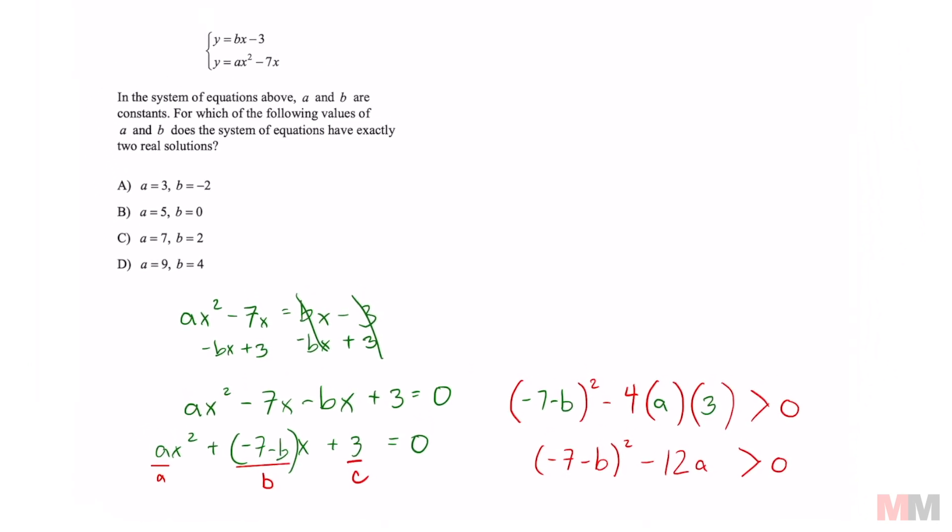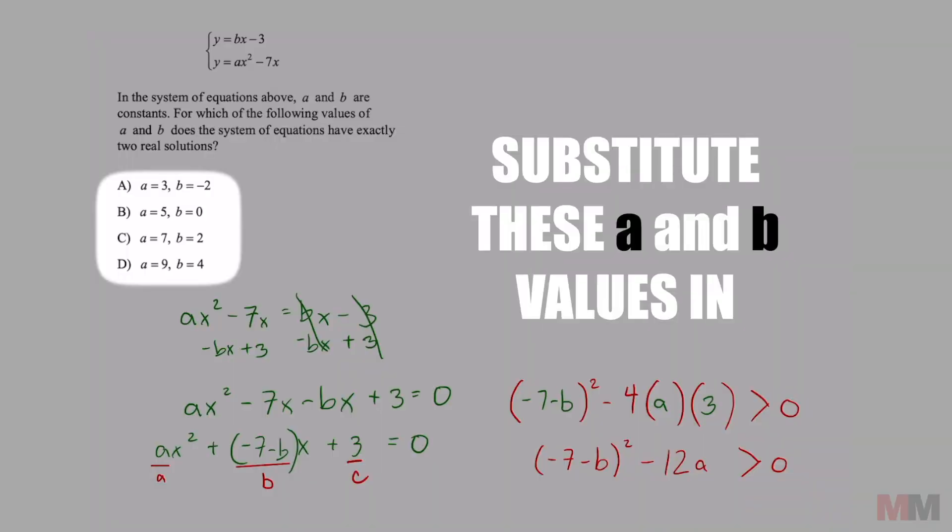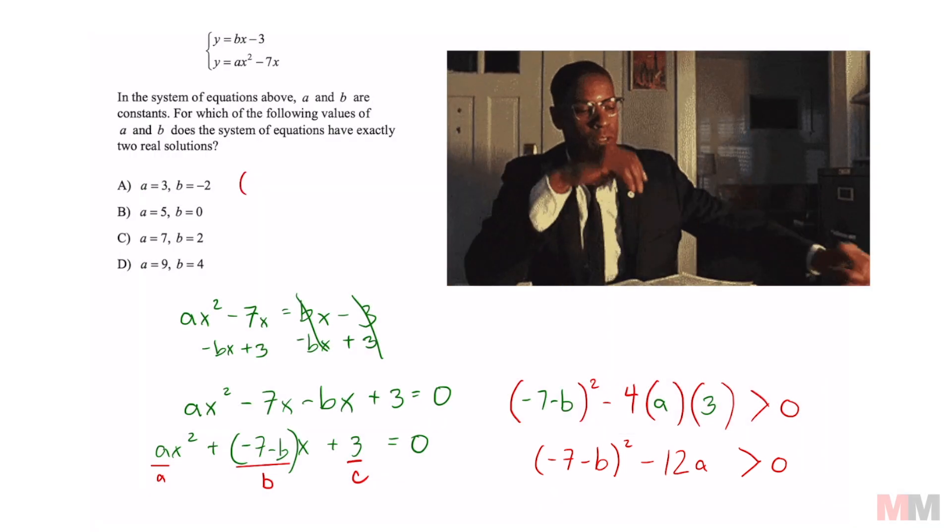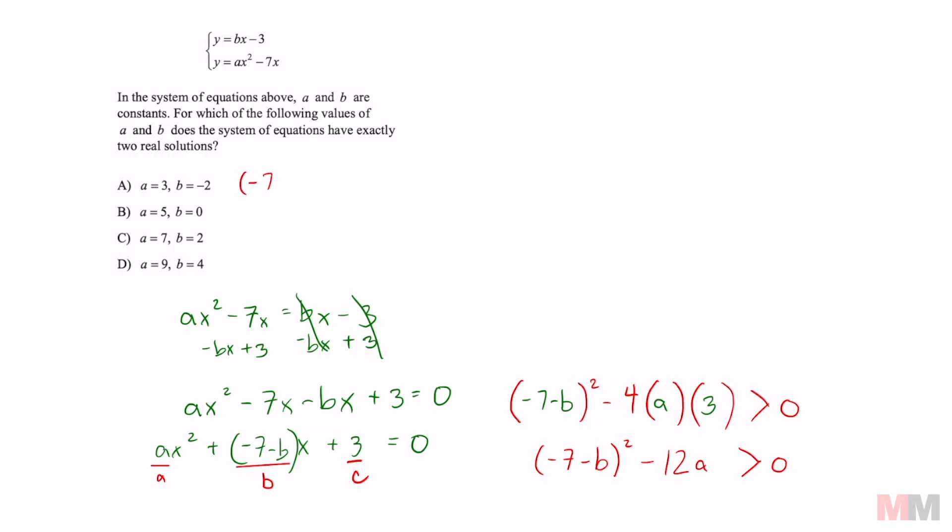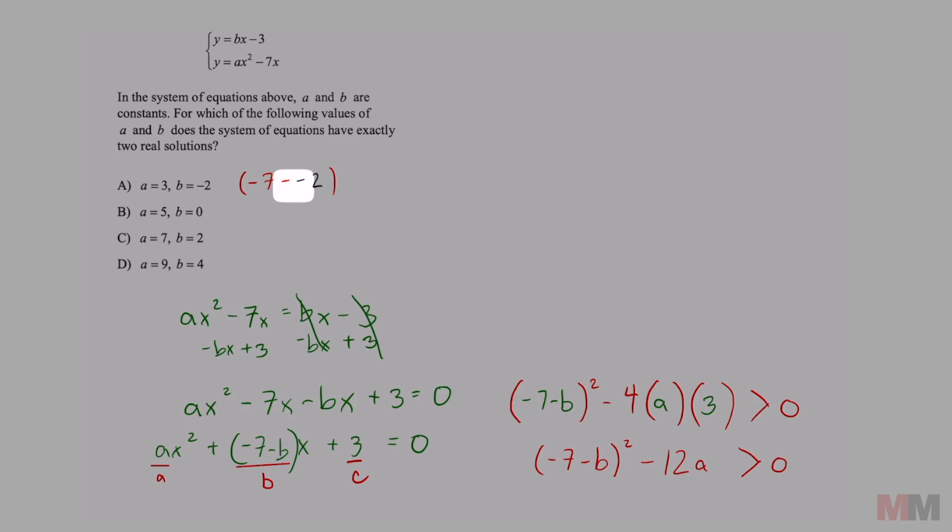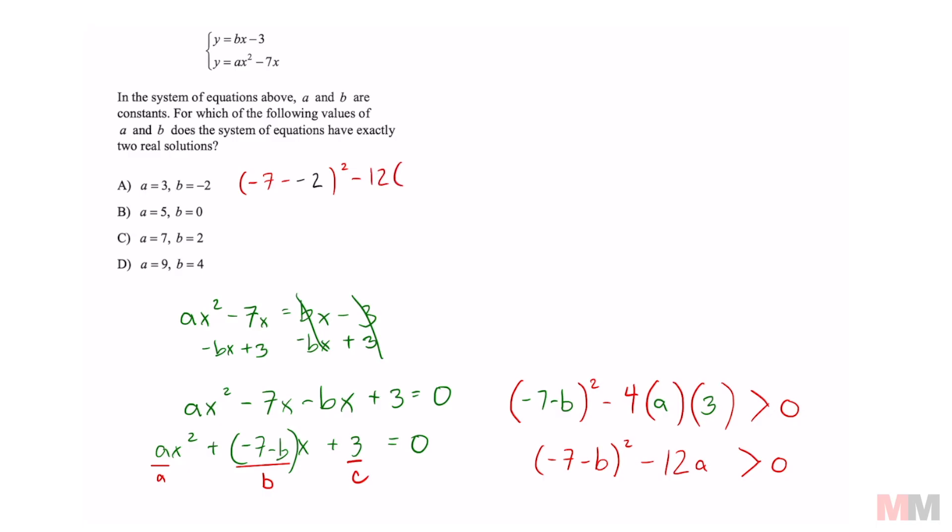From here, I think the fastest route is just to substitute my values in for a and b one by one. So if you wanted to test out a using this, it's going to be a pain, but it should be pretty fast. It's going to be negative 7 minus negative 2 because that's my b value. And be careful with that double negative there. Minus 12 times 3 better be greater than 0. You do that really quick. All of this is going to be negative 5 squared. And negative 5 squared is 25 minus 36. I know that's not going to be it because that's going to be a negative number.